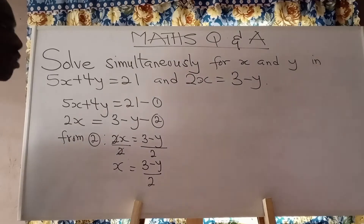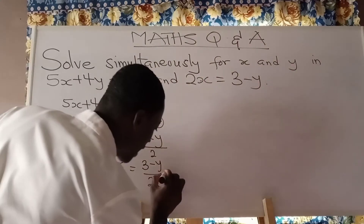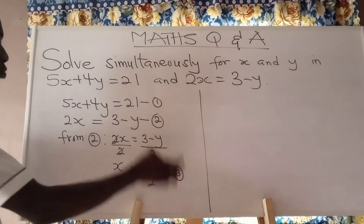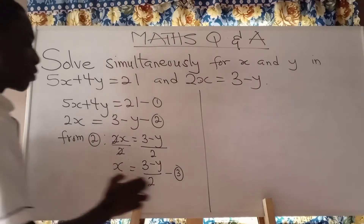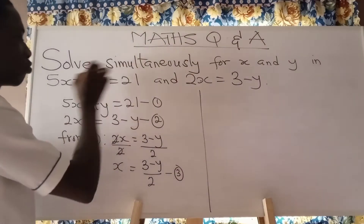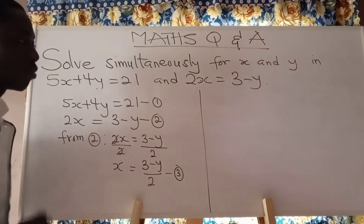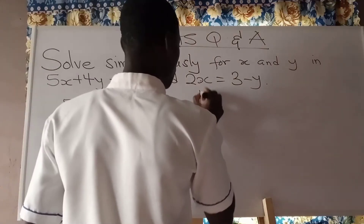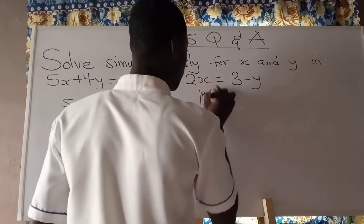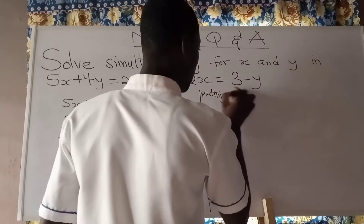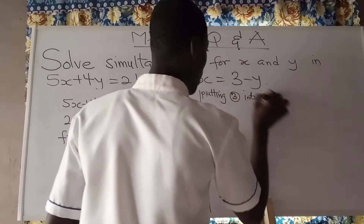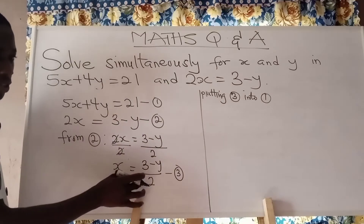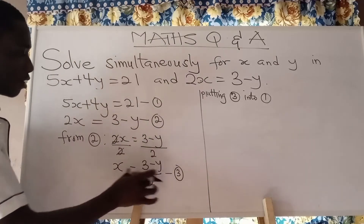In order not to confuse you, let me label that as equation 3. So I have equations 1, 2, and 3. I'm going to put equation 3 into equation 1. That means wherever I see x in equation 1, I will write 3 minus y all divided by 2.